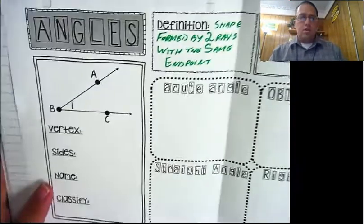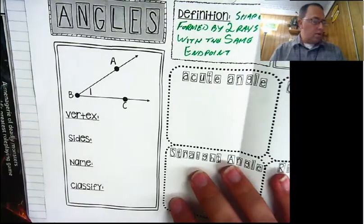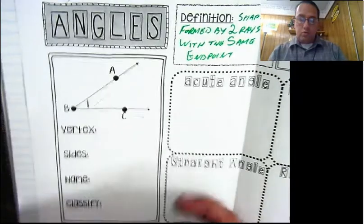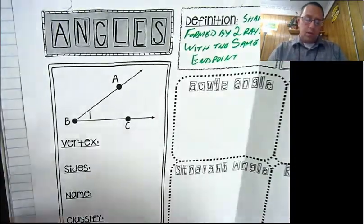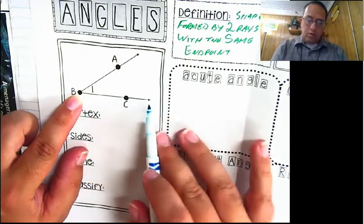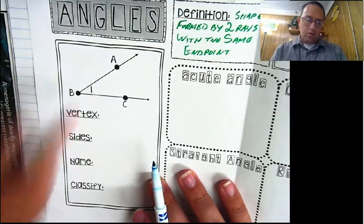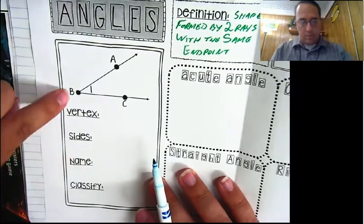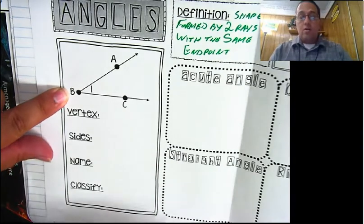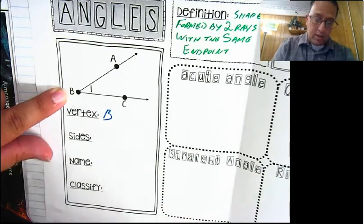So let's take a look at this angle over here. Here I have an angle. It is formed by two rays - we have one ray, we have two rays, and when they come together they form an angle right there. Now this point here, that common endpoint, is called the vertex. The vertex is point B.